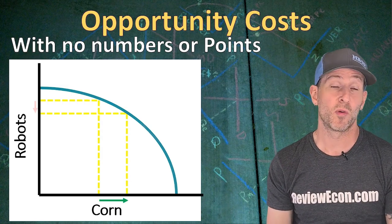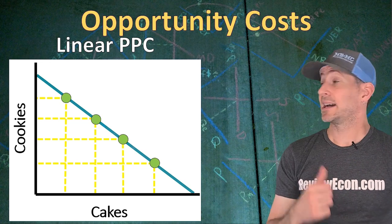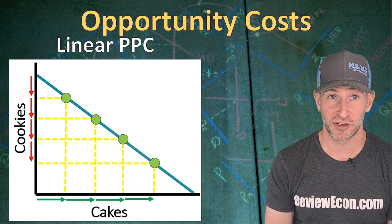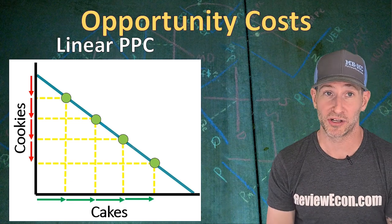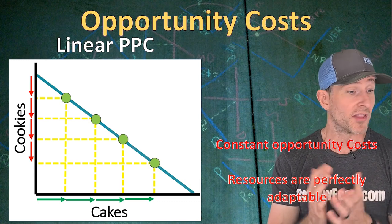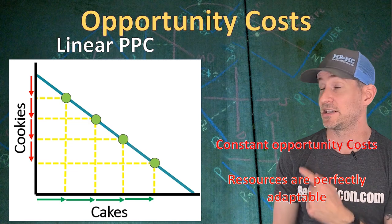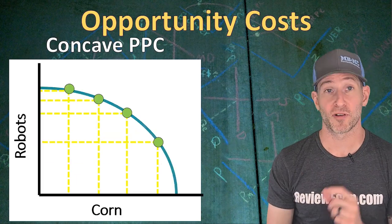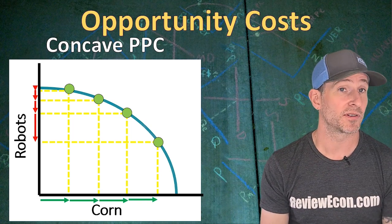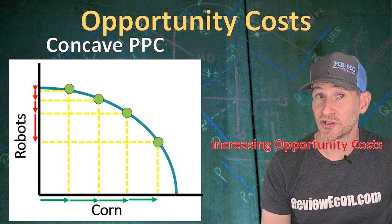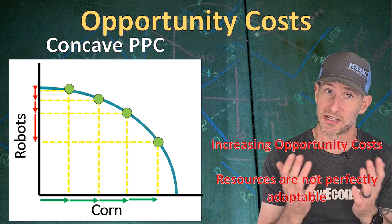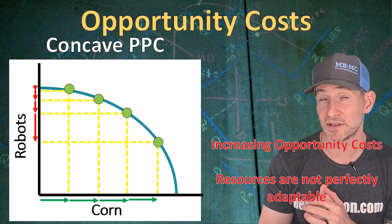Even without numbers, the graph shows us that with more corn production, we are going to lose some production of robots. If we see a linear Production Possibilities Curve, that means the production of one good has constant Opportunity Costs in terms of the other good. In the example with cakes and cookies, those constant Opportunity Costs come from resources being perfectly adaptable — the resources needed to make cakes are equally adaptable to producing cookies. But most of the time you'll see a concave or bowed-out curve like we have with robots and corn. As we produce more and more corn, we see greater and greater Opportunity Costs in terms of robots, because resources used to produce corn are not perfectly adaptable to producing robots.